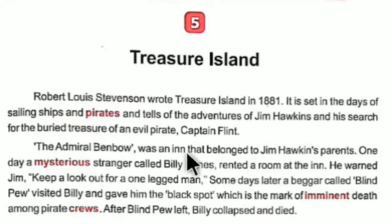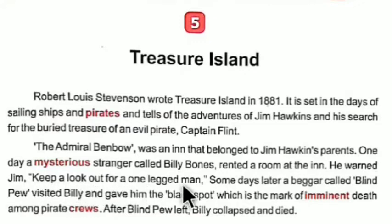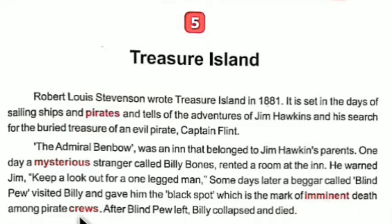The Admiral Benbow was an inn that belonged to Jim Hawkins' parents. One day a mysterious stranger called Billy Bonds rented a room at the inn. He warned Jim to keep a lookout for a one-legged man. Some days later a beggar called Blind Pew visited and gave him a black spot, which is the mark of imminent death among pirate crews. After Blind Pew left, Billy collapsed and died. Imminent means likely to take place; crew means the persons working on a ship or aircraft.